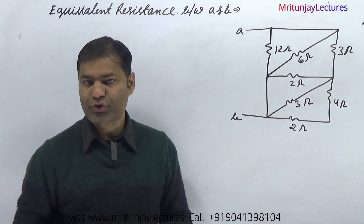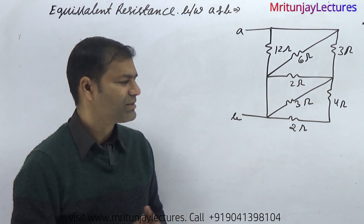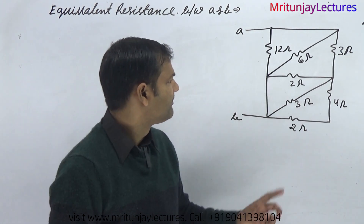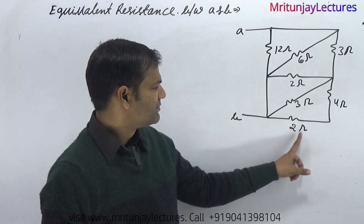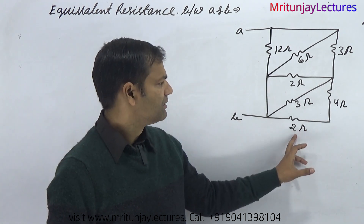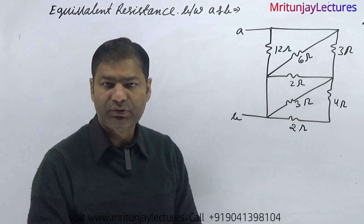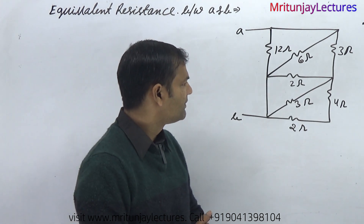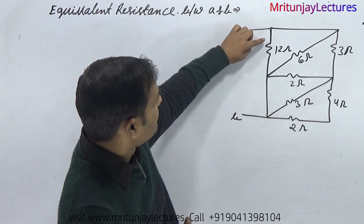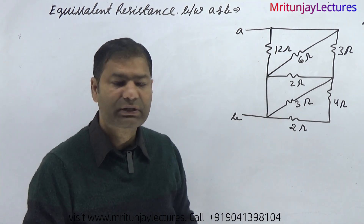Determine equivalent resistance between A and B. First of all, check which ones are in series and which are in parallel. If you see this one and this one are in series, the final combination gives us 6 ohm. Now another way — if you look at this one and this one, both are in parallel.